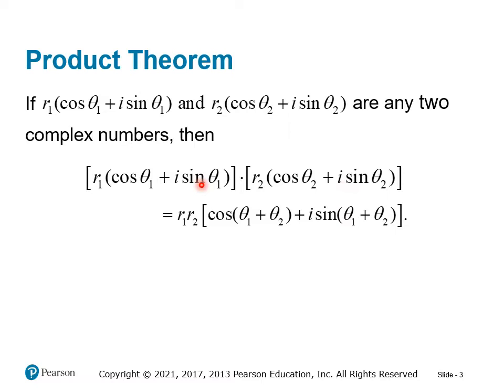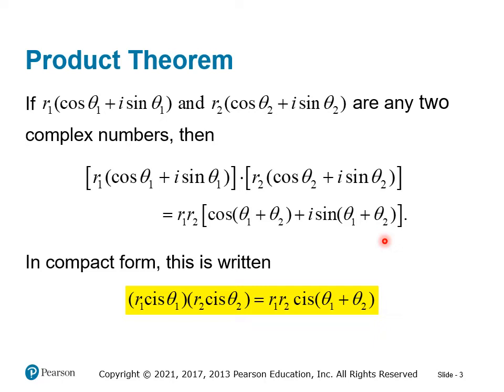This is equal to the product of their magnitudes, r1 r2, times cos i sine of the sum of their angles, θ1 plus θ2. So in the short form again here, I think it's easier to memorize the formula. Remember that cis just stands for cosine plus i sine.